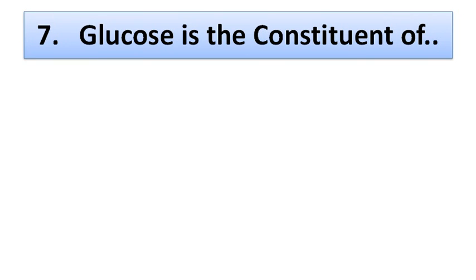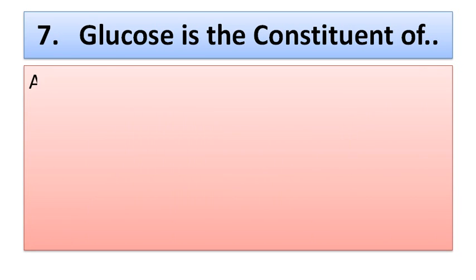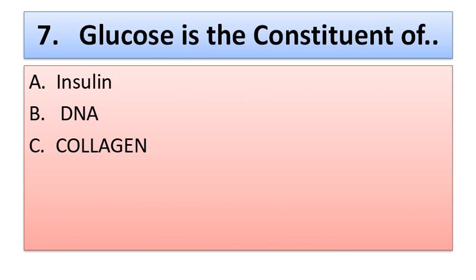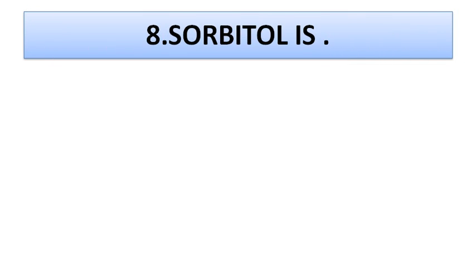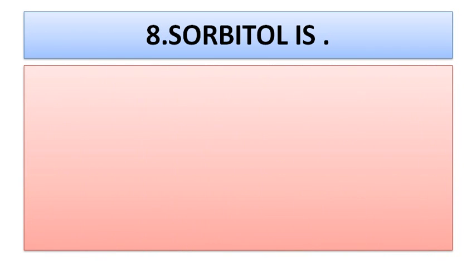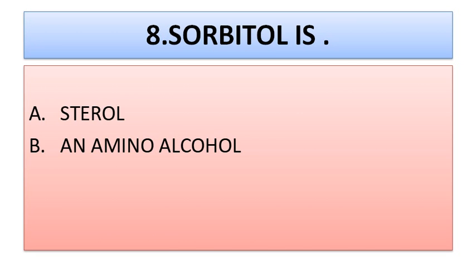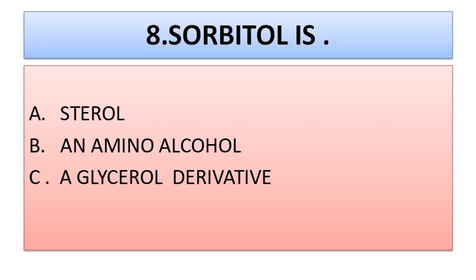Question number seven: glucose is the constituent of — option A: inulin, option B: DNA, option C: collagen, option D: starch. The correct option is option D, starch.